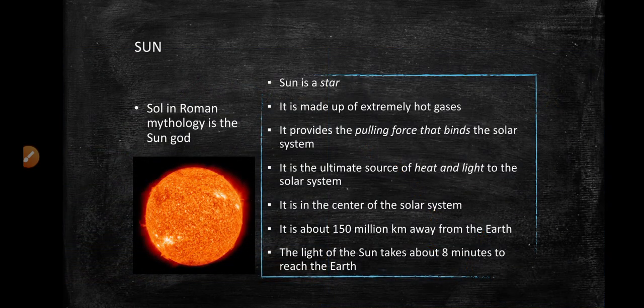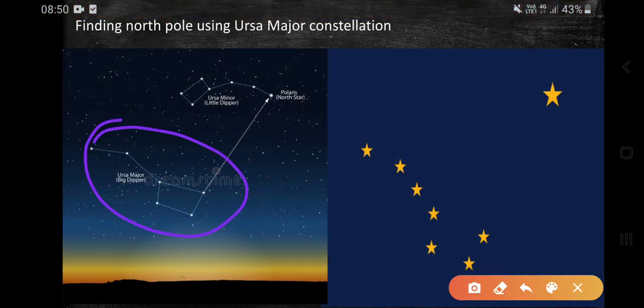Ursa Major is a massive constellation, and this is the handle. The two stars which are away from the handle are called Pointer Stars.